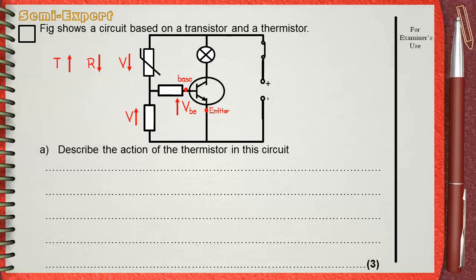When this VBE, the voltage across base and emitter of the transistor, becomes greater than 0.6 volts, the transistor switches on, and current flows in the transistor and the lamp. So the lamp becomes on.